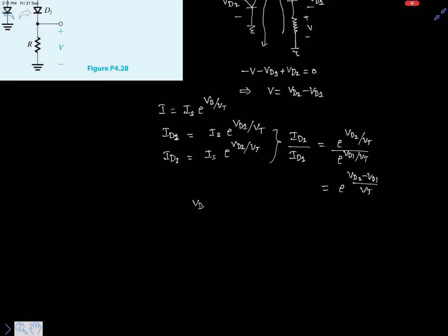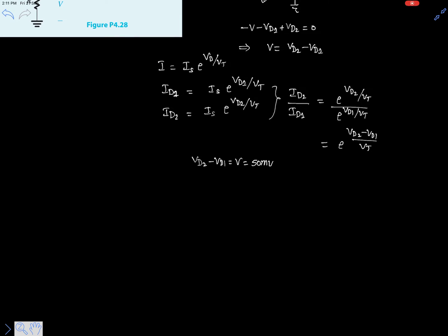So clearly this is nothing but e to the power VD2 minus VD1 over VT. But VD2 minus VD1 is nothing but V, that is given already, it is 50 millivolts. And let's take VT is 25 millivolts at room temperature. So now ID2 over ID1 equals e to the power 50 divided by 25, that is nothing but e square.